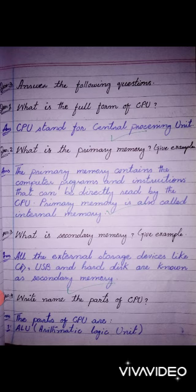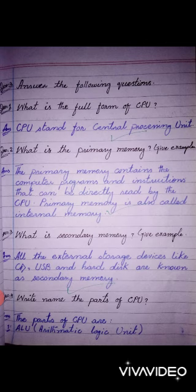Question number 3. What is secondary memory? Give example. Answer: All the external storage devices like CD, USB, and hard disk are known as secondary memory.